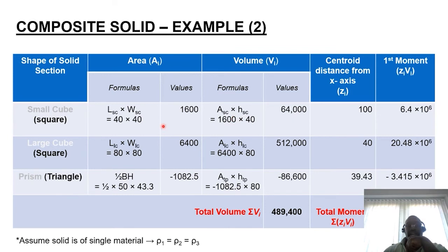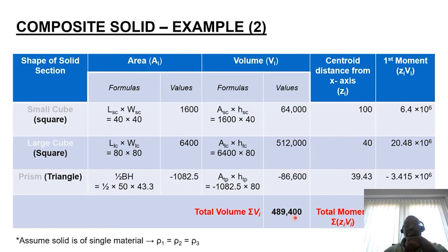The volumes are: small cube = 64,000mm³, large cuboid = 512,000mm³, and the triangular prism = −86,600mm³. Adding all volumes together gives the total volume of the composite form: 489,400mm³.